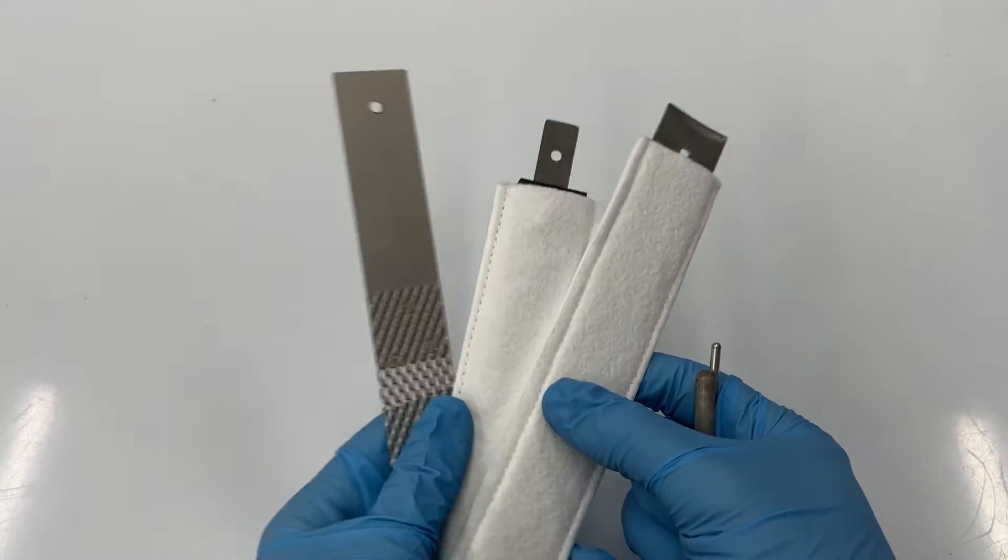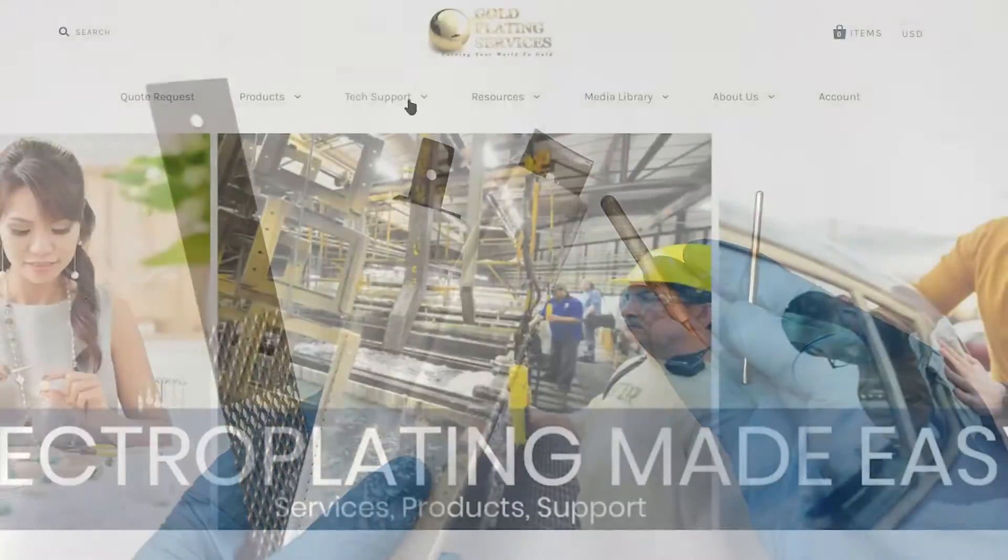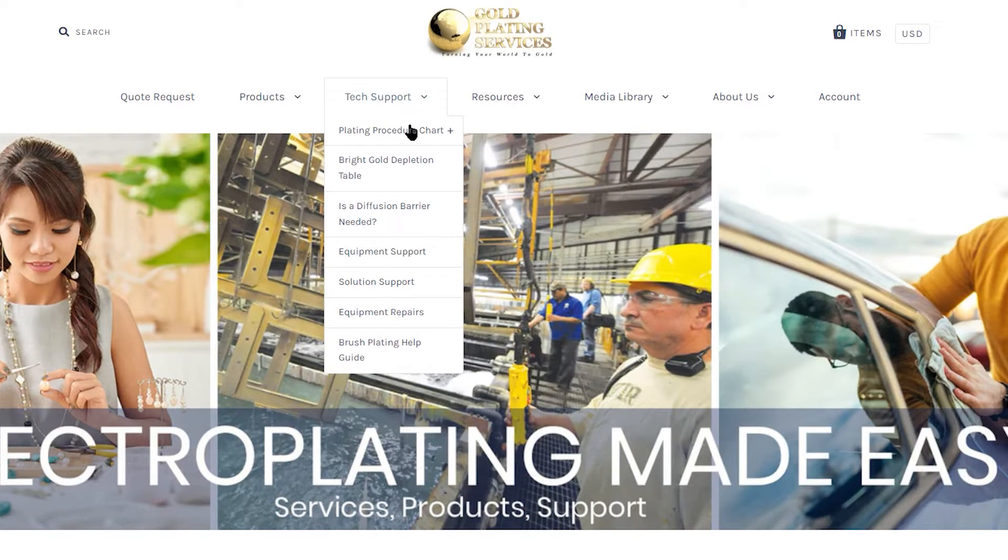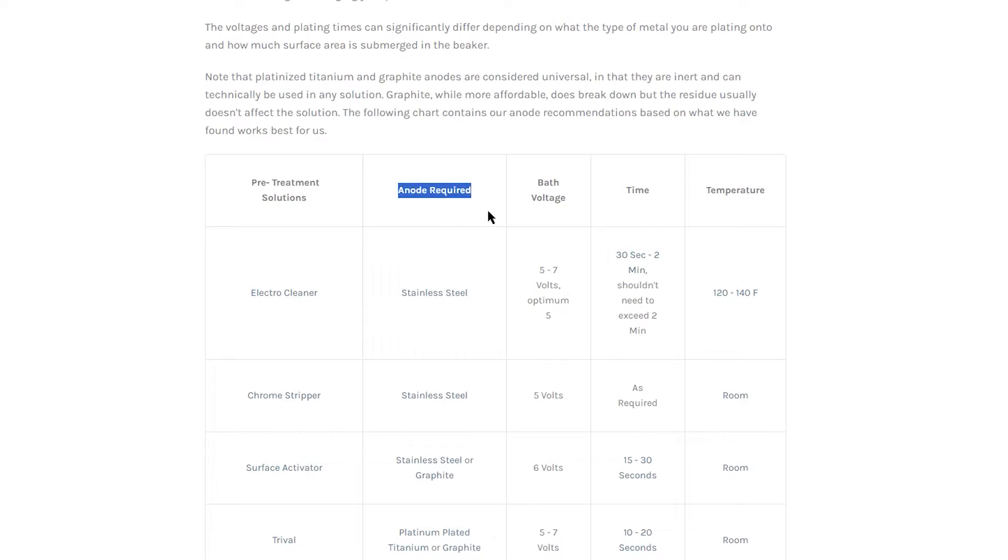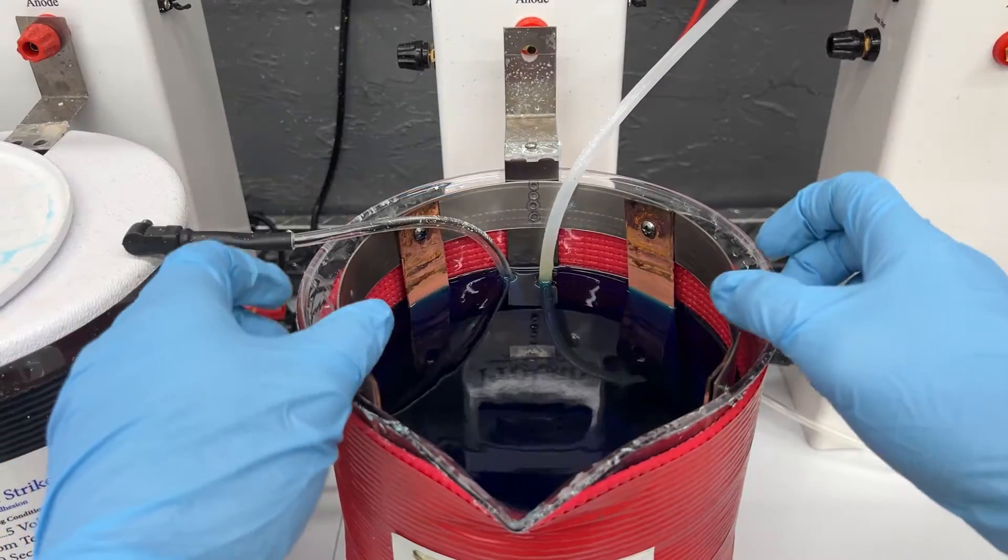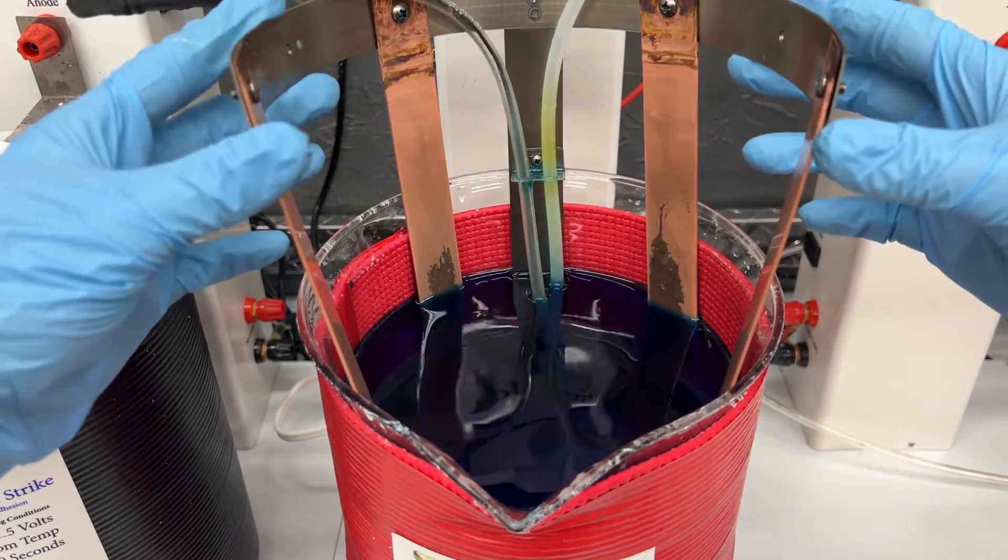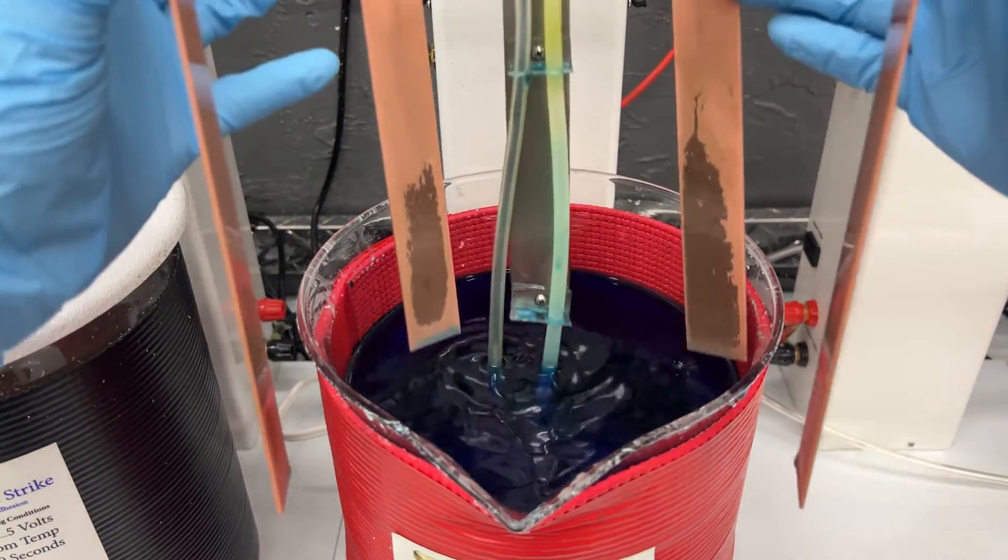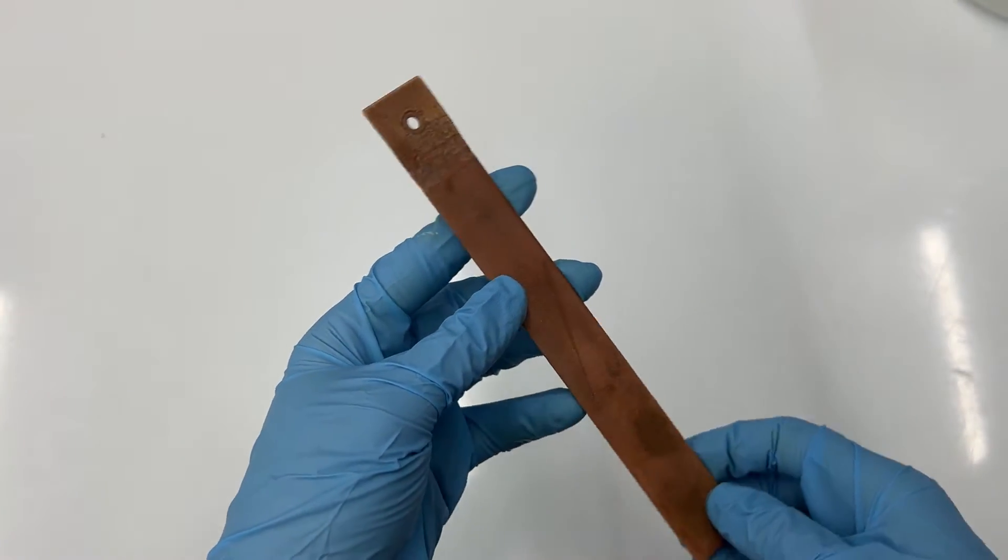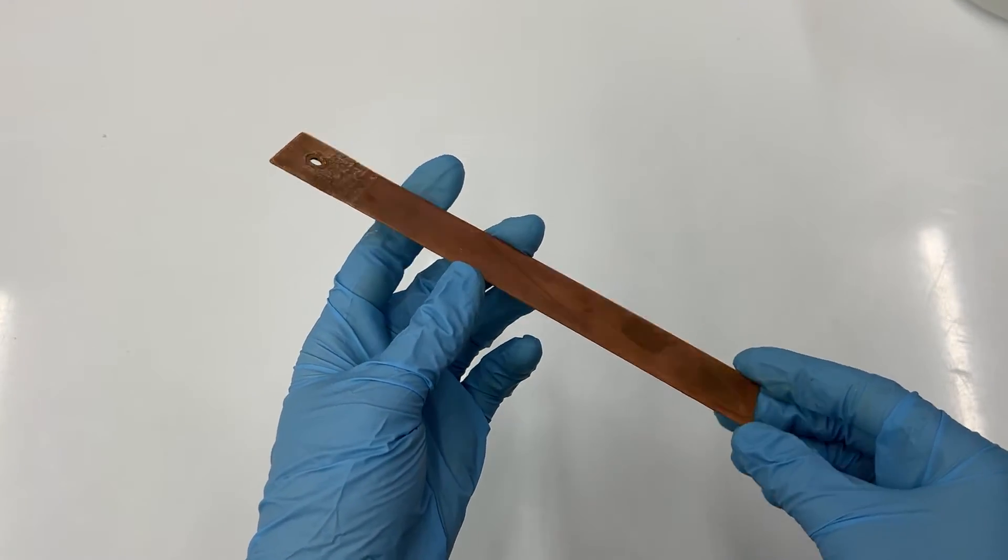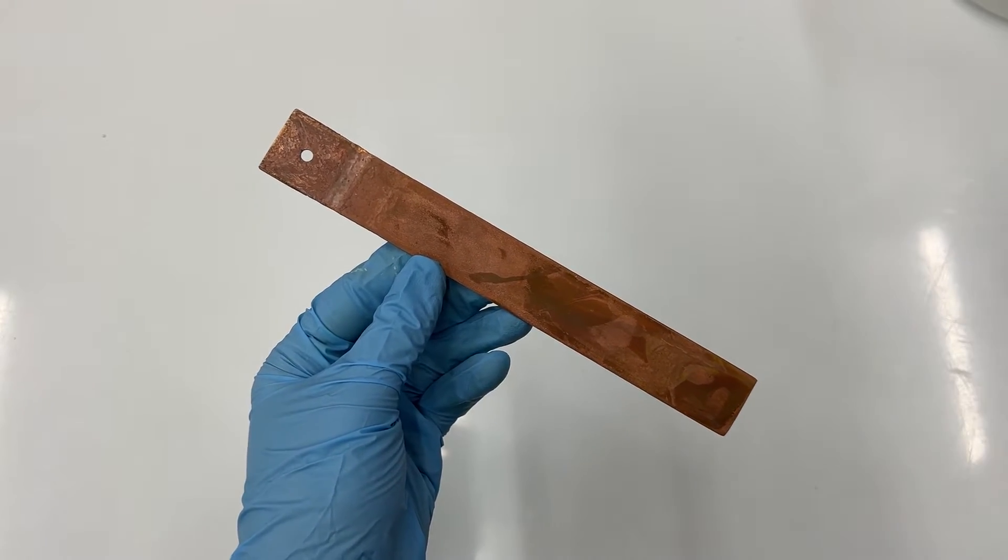Ensure that you have the proper anodes or bits for your project. Different solutions require different anodes. If you are unsure, double check the plating procedure chart on our website that applies to your setup found under the tech support tab. It is also important to occasionally check the condition of your anodes to see if there are any that are wearing down and need to be replaced. If your anodes or bits are starting to look older but still function well, it might be a good time to order more to have on hand for when they need to be replaced.